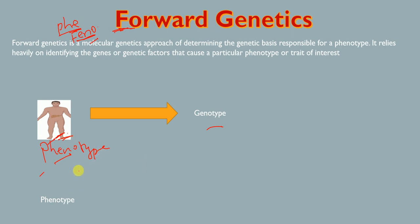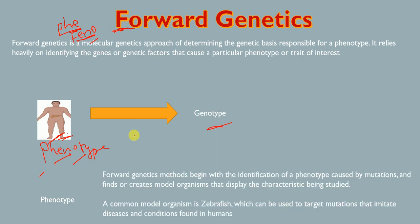Forward genetics methods begin with the identification of a phenotype caused by mutations, and then find or create model organisms that display the characteristics being studied. A common model organism is the zebrafish, which can be used to target mutations that imitate diseases and conditions found in humans.